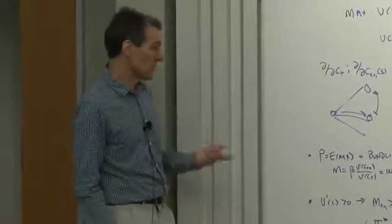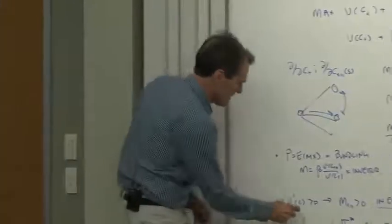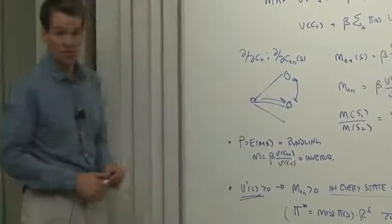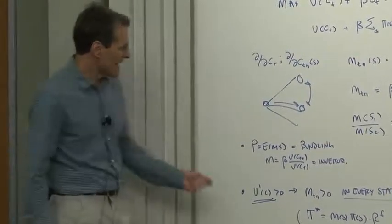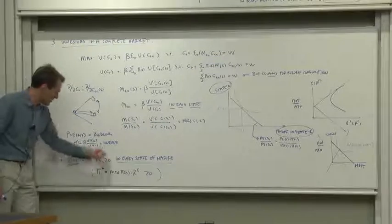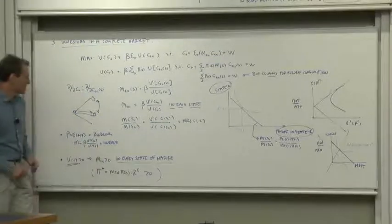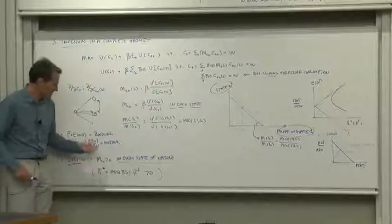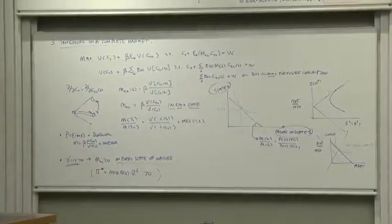Second thing we've learned from looking at this, now quite typically investors have positive marginal utility. They always want a little bit more. That implies, if that's true, then we know they must face, in equilibrium, a market where the marginal rate of substitution, where the discount factor is positive in every state of nature.